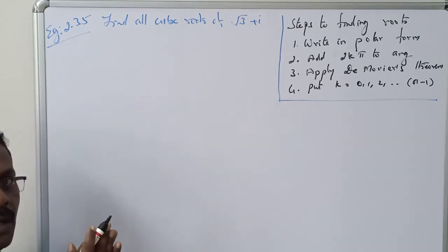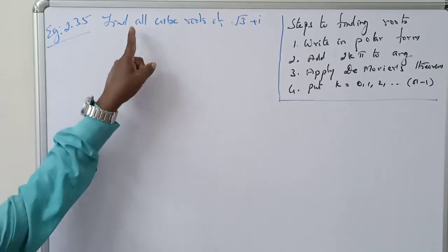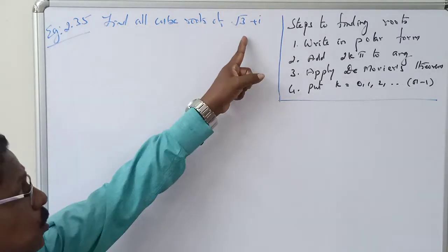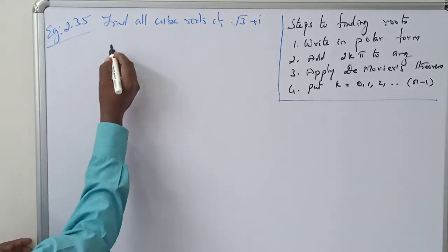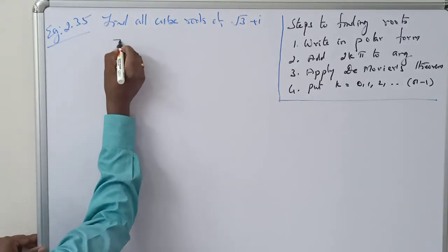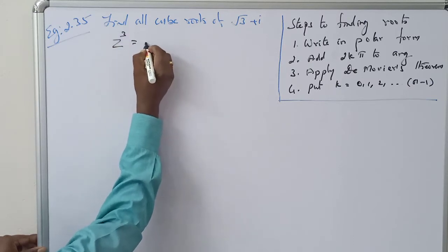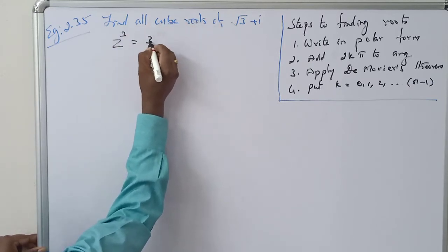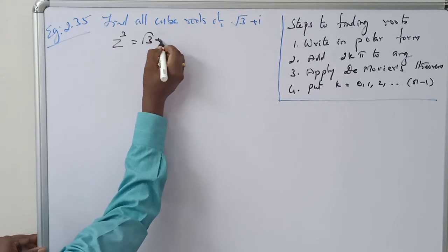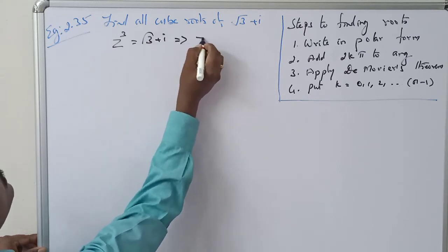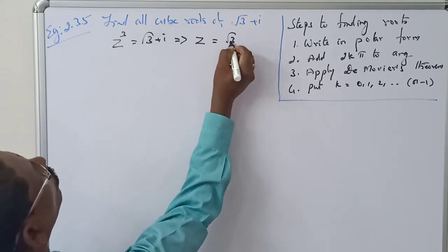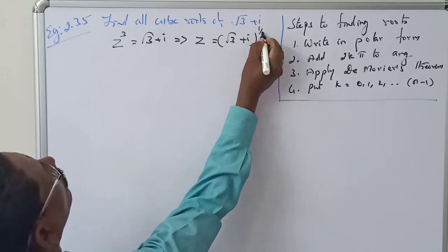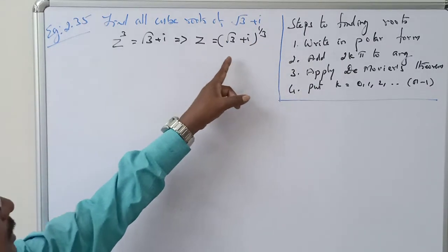Good morning students. Find the cube roots of (√3 + i). So we take Z cubed equal to (√3 + i), which implies Z equals (√3 + i) to the power 1/3.